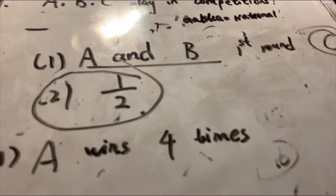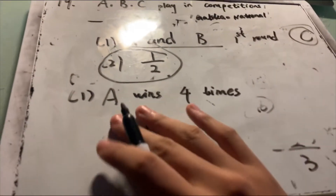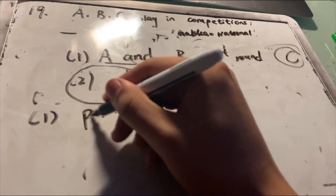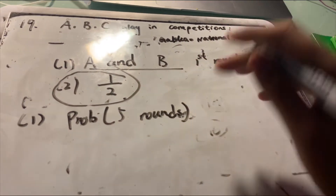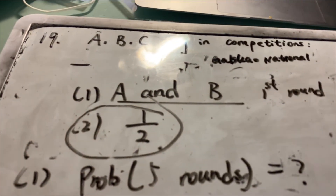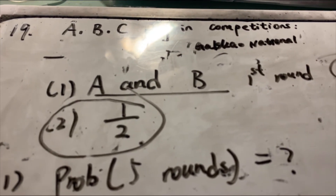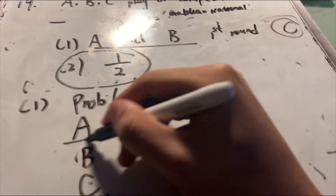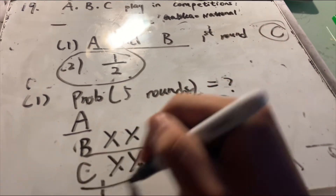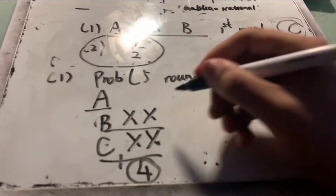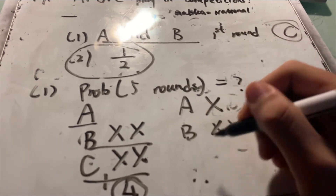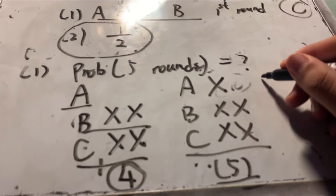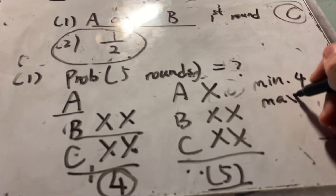The second problem: what is the probability that there are exactly 5 rounds in total? We know the game ends when two people are eliminated. The minimum number of rounds is four — for example, if one player wins all four consecutively. The maximum is five. So the total number of rounds is either four or five.